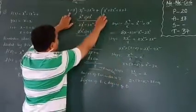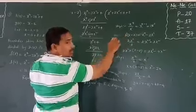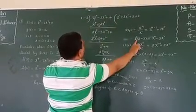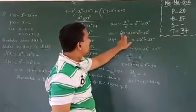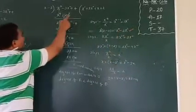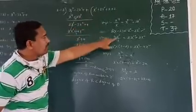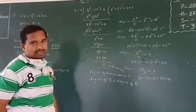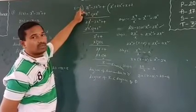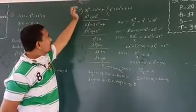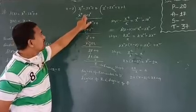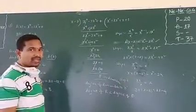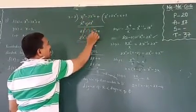Now multiply x cubed by the divisor x minus 2. Whatever we get in the quotient, multiply it with the divisor. x cubed times x gives x to the power 4, and x cubed times minus 2 gives minus 2x cubed. Write x to the power 4 minus 2x cubed below. Division is continuous subtraction, so subtract: x to the power 4 minus x to the power 4 equals 0. Changing signs, minus 2x cubed becomes plus 2x cubed. Bring down minus 3x squared plus 4, giving 2x cubed minus 3x squared plus 4.